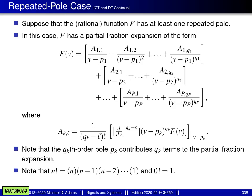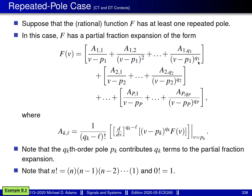Now let's consider partial fraction expansions for the repeated pole case. Suppose that the rational function f has at least one repeated pole. In this case, f has a partial fraction expansion of this particular form here, where the coefficients a_{k,l} are computed using this formula here. Note that the qk-th order pole pk contributes qk terms to the partial fraction expansion. For example, the pole p1, which is a pole of order q1, contributes q1 terms — all the terms in the first set of square brackets.